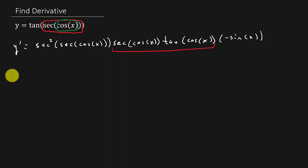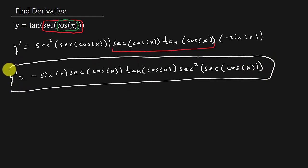Alright, so that's going to give us y prime is, well, I guess we can write it sine x secant cosine x tangent cosine x secant squared secant cosine cosine x. And this would be your derivative, alright.